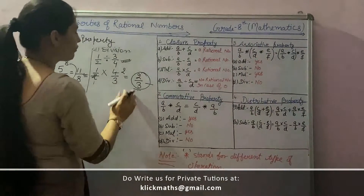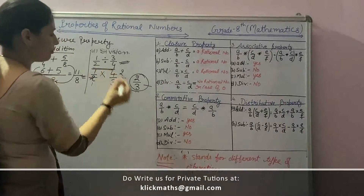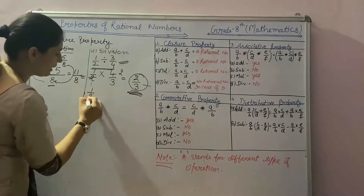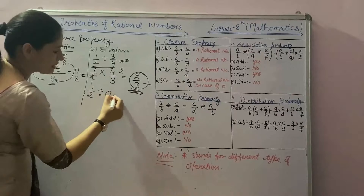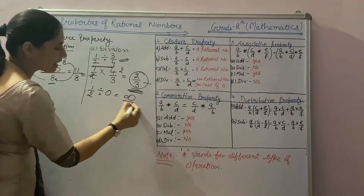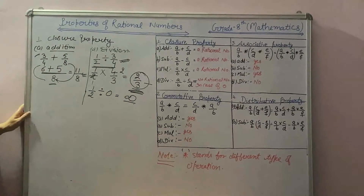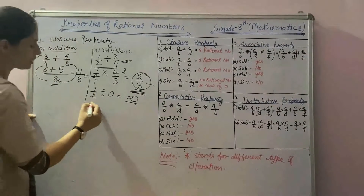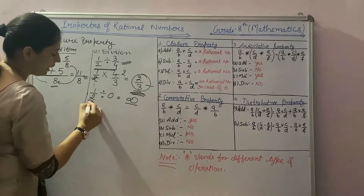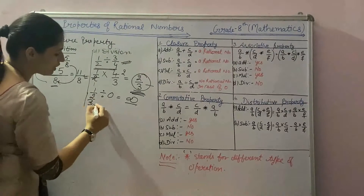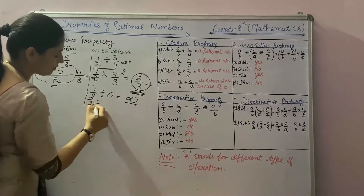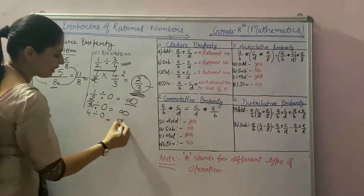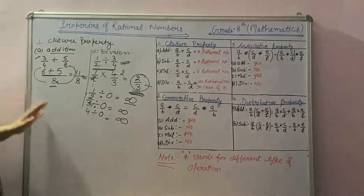That means when we divide 2 rational numbers, we get another rational number. But when we divide a rational number by 0, we will get infinity as the outcome. In the same way, you can check for integers and natural numbers — when we divide an integer or natural number by 0, we will get infinity as the outcome.